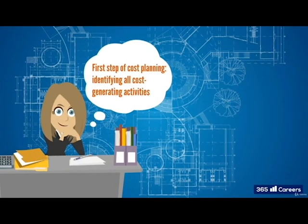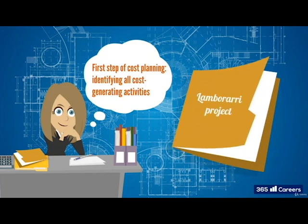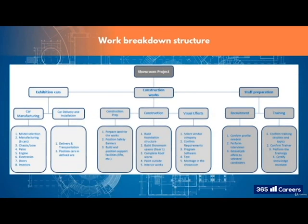The first step of cost planning is identifying all cost-generating activities. If anything is missed, then it will immediately affect the project budget. So let's go to the Lamberari project and have a look at how you could approach this part of the process. The best thing to do now is whip out your work breakdown structure and activity list. Let's have a closer look at the three main work streams we have.